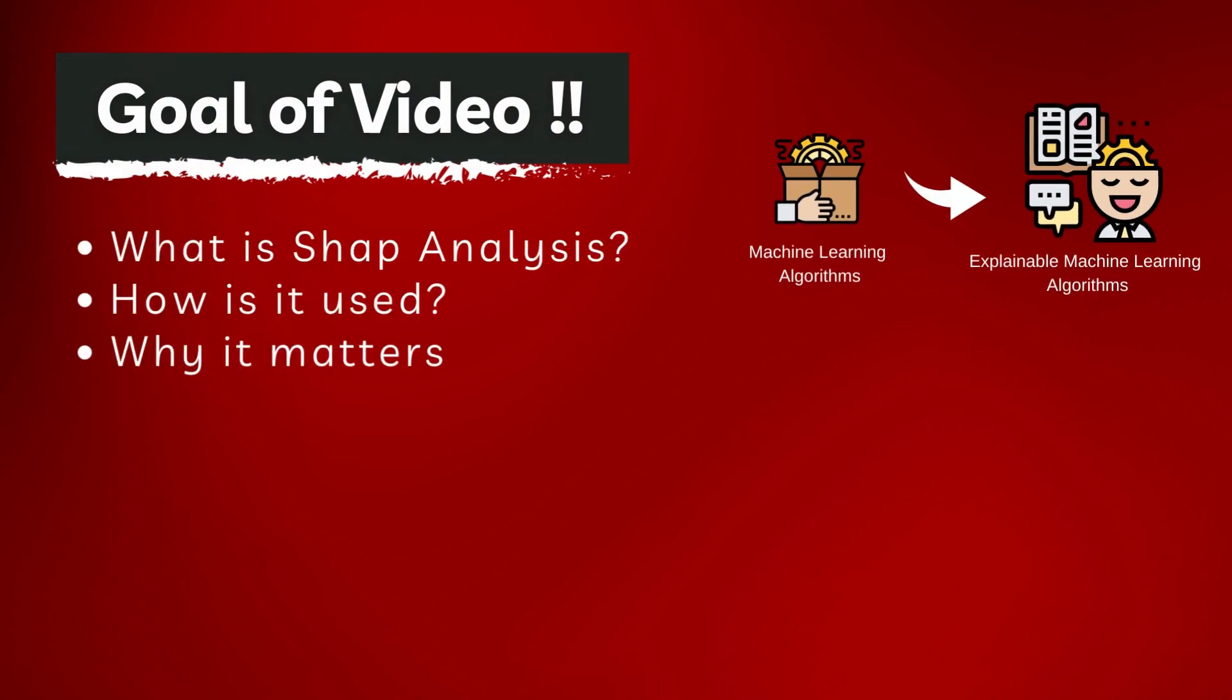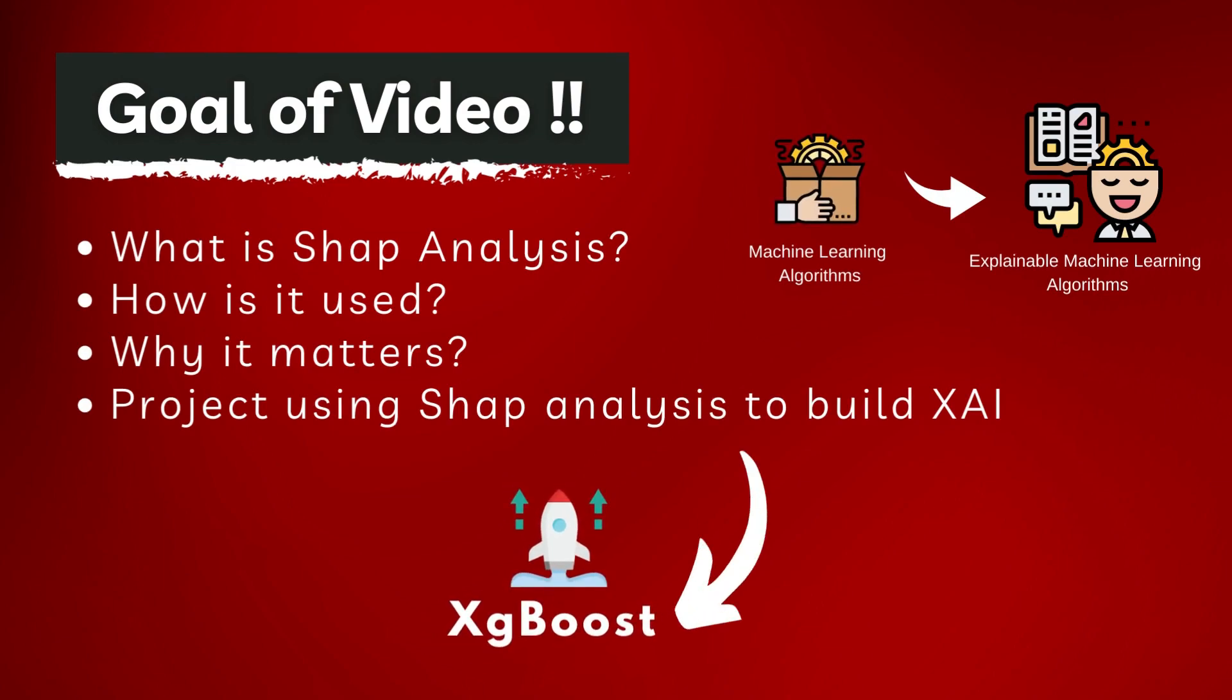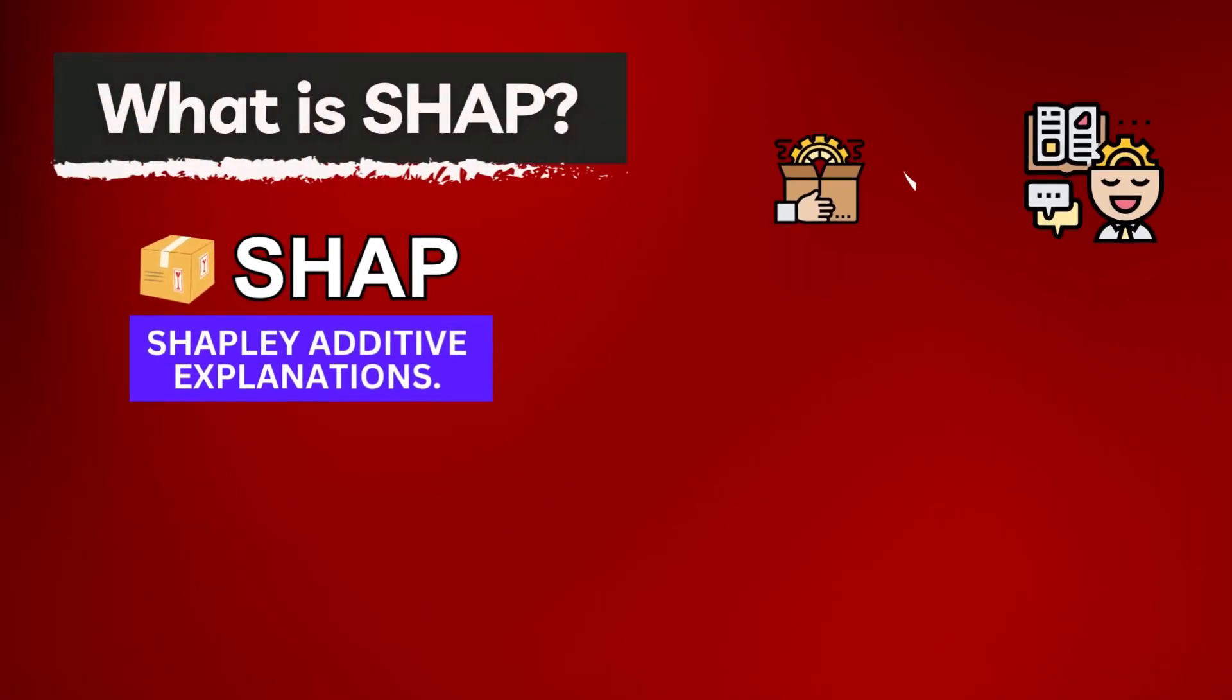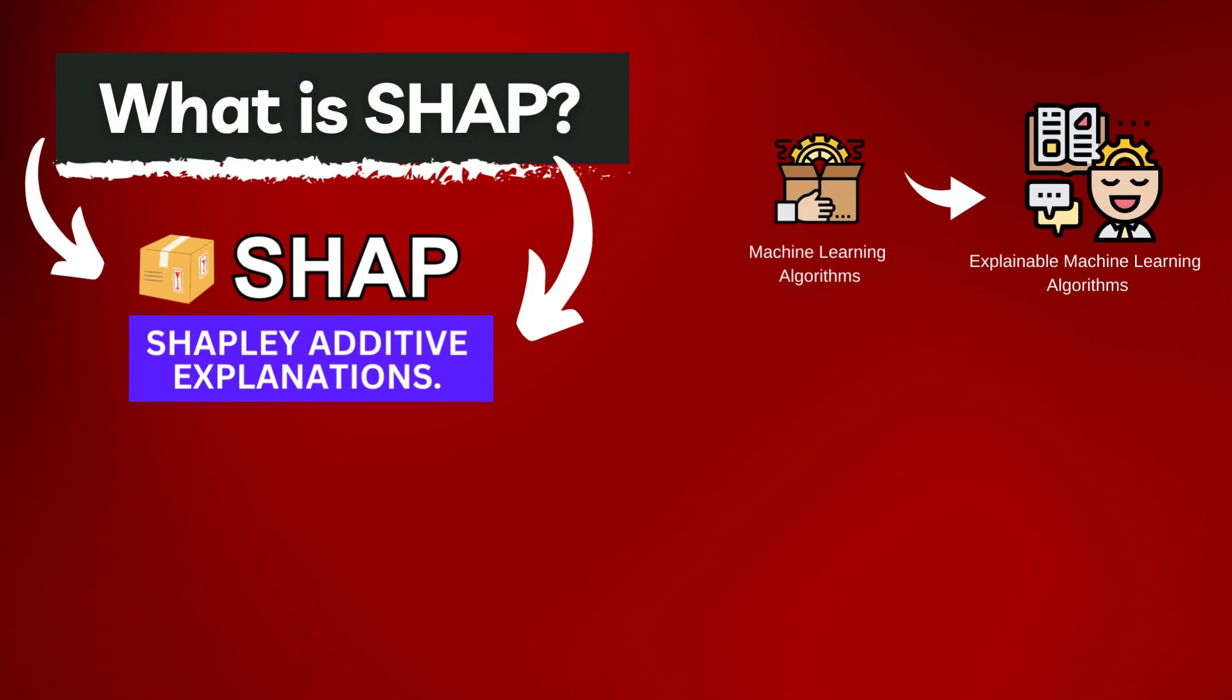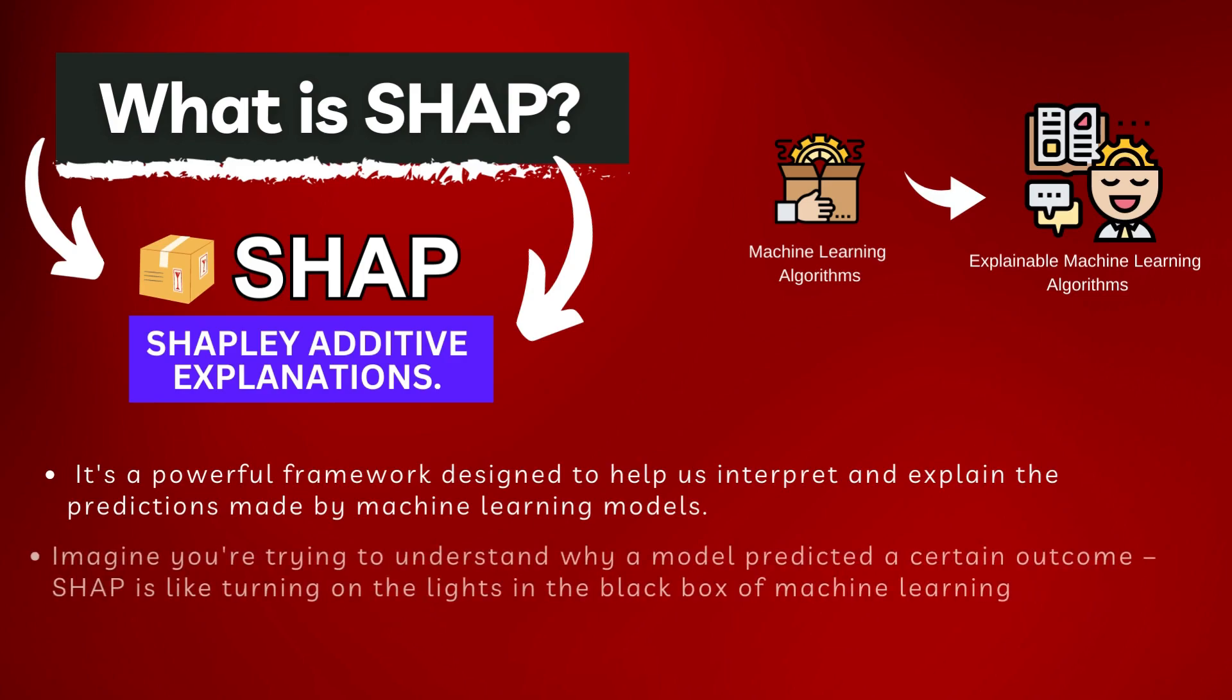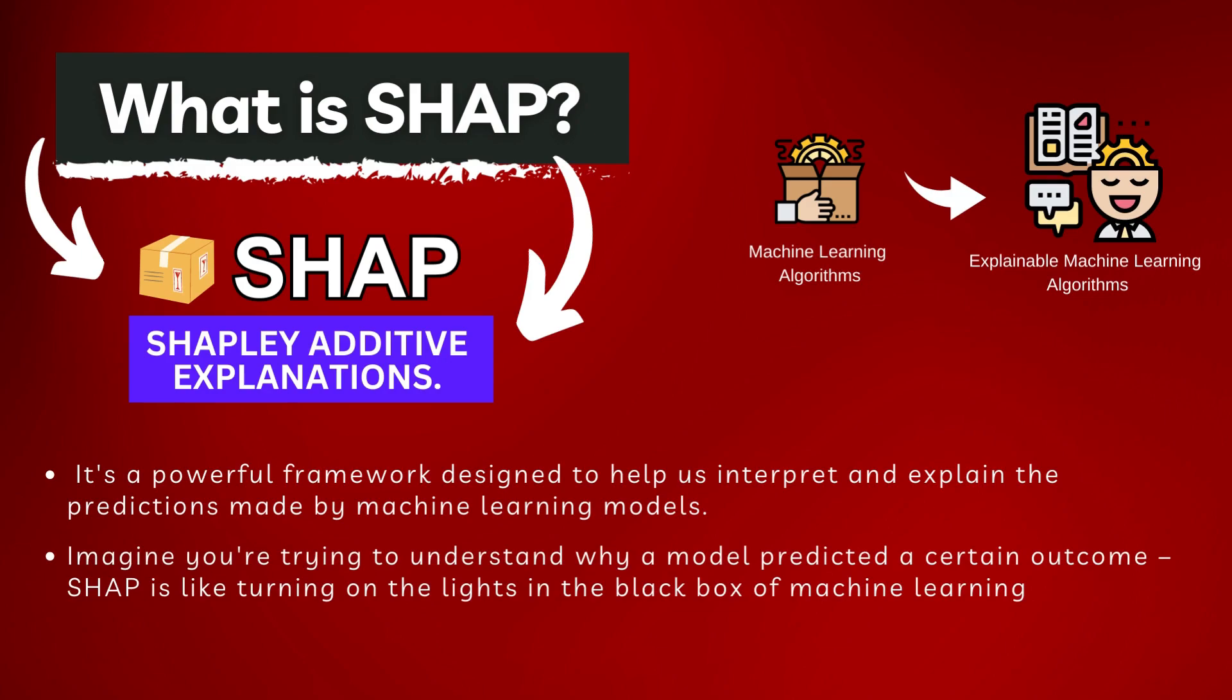Why it matters and we also do a project using SHAP analysis to explain the predictions of an XGBoost regression model. Let's start with the basics. SHAP stands for SHapley Additive exPlanations. It's a powerful framework designed to help us interpret and explain the predictions made by machine learning models. Imagine you are trying to understand why a model predicted a certain outcome. SHAP is like turning on the light in the black box of machine learning.